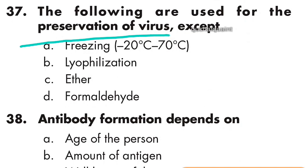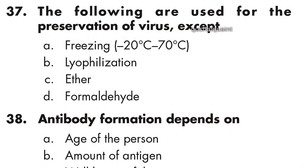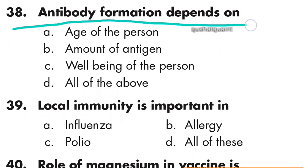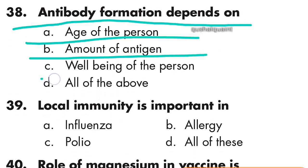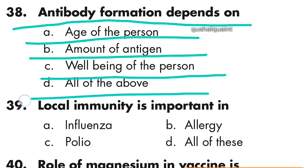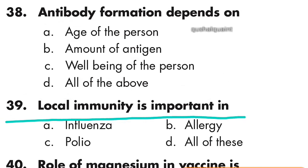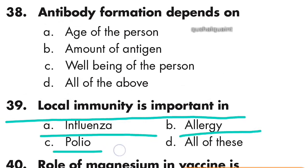Question 37: The following are used for the preservation of virus except ether, option C is right. Question 38: Antibody formation depends on the age of the person, amount of antigen, and well-being of the person — option D, all of the above, is right.